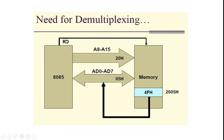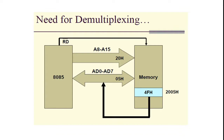With RD bar equal to 0, the data 4F hex is loaded onto AD0 to AD7. Since the same lines are used for both address and data, 4F hex overwrites the 05 that was previously on AD0 to AD7. Initially 05 was there to access the memory location, but after the data is loaded, 05 is overwritten by 4F hex — and as a result, the address is lost. This is the main problem with the 8085, and that is why there is a need for demultiplexing.